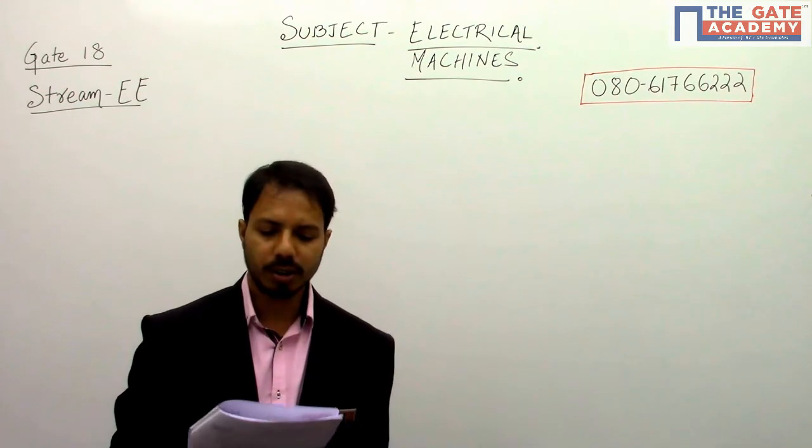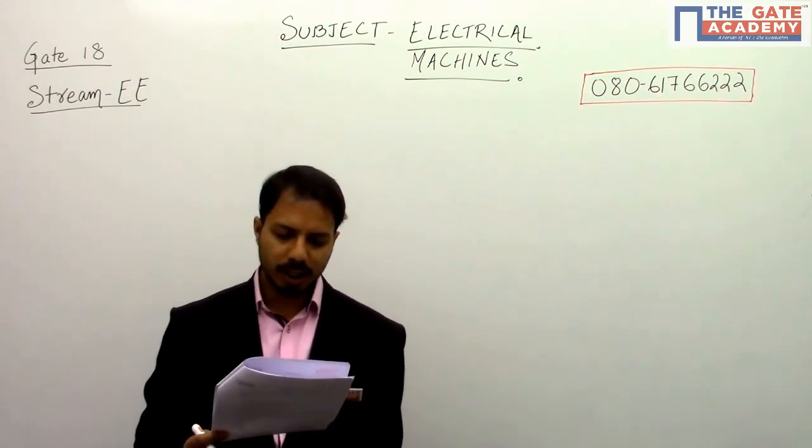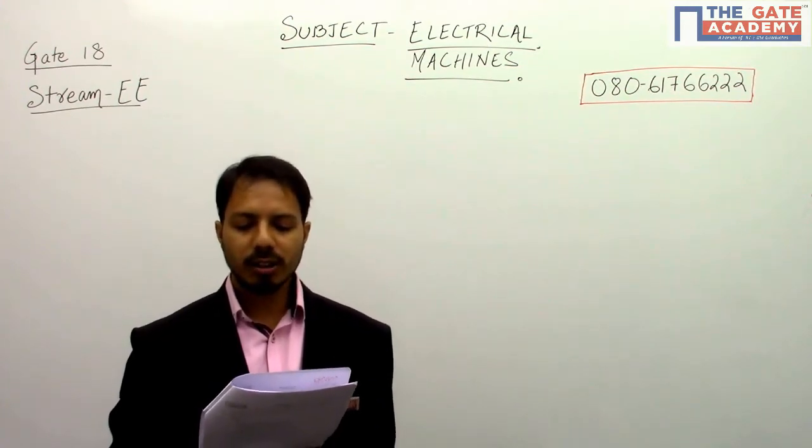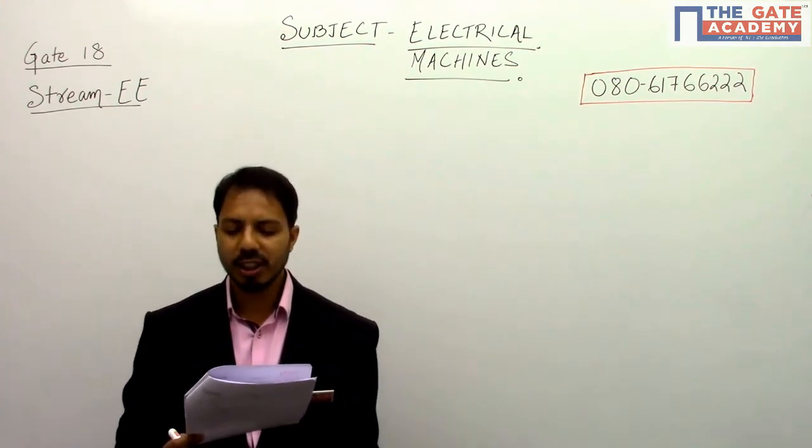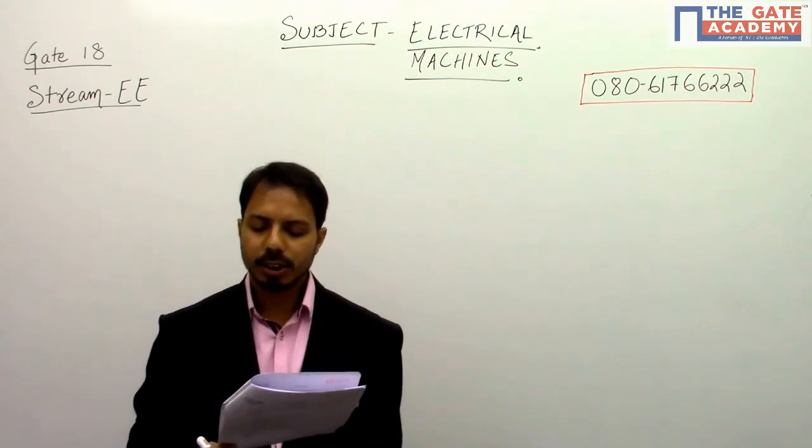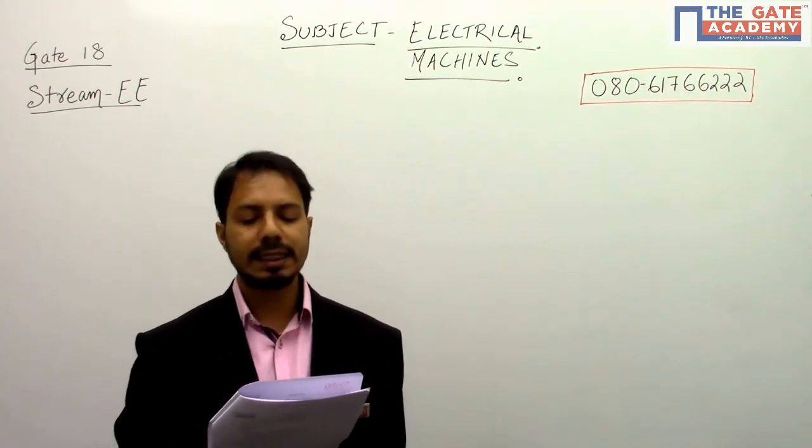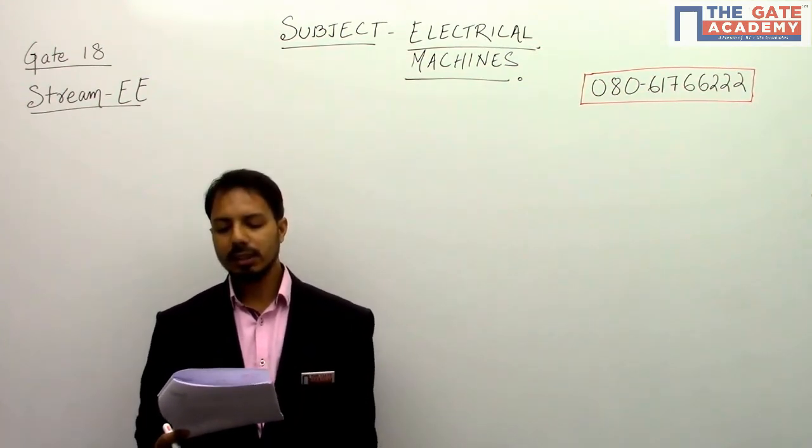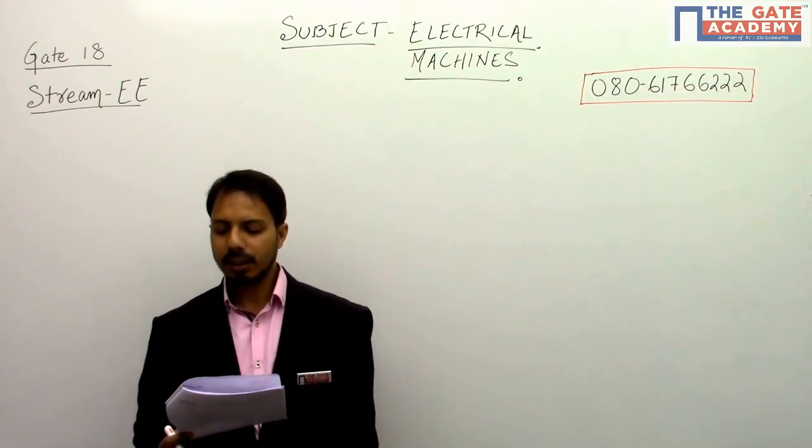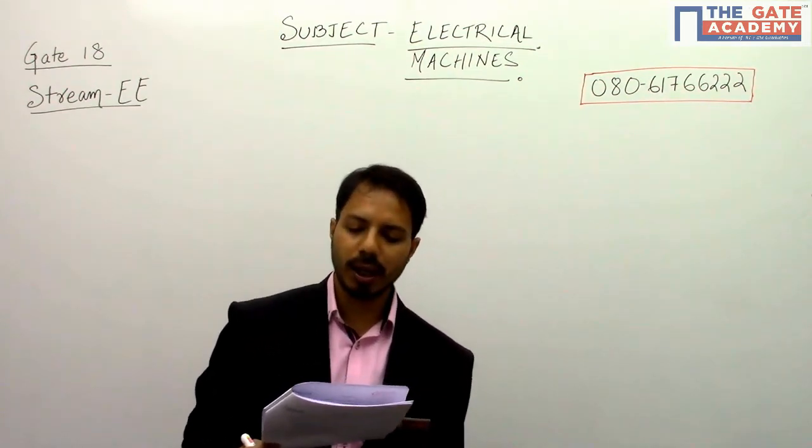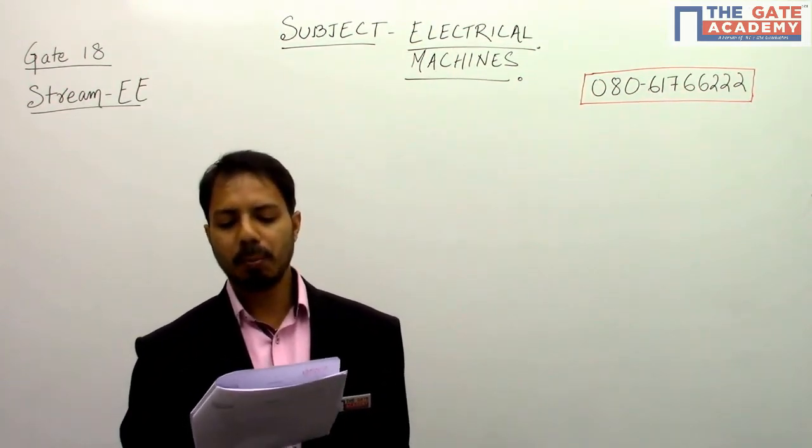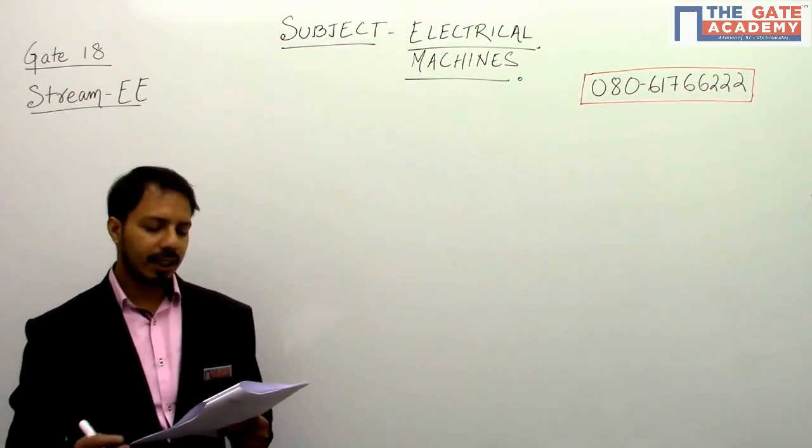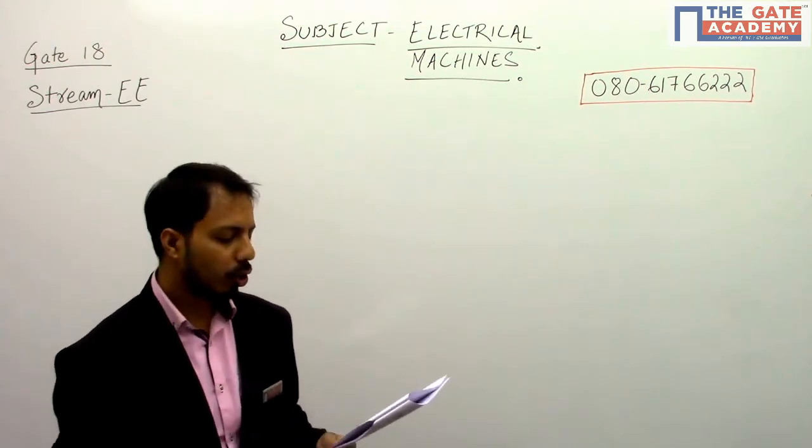This is a one mark question. It says a single phase 100 kVA, 1000 volt by 100 volt, 50 Hertz transformer has a voltage drop of 5% across its series impedance at full load. Of this 5%, 3% is due to resistance. The percentage regulation of the transformer at full load with 0.8 lagging power factor is... So there are four options.